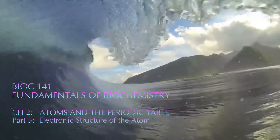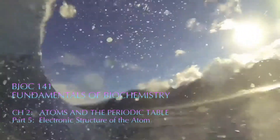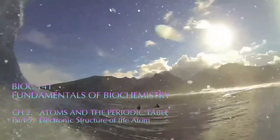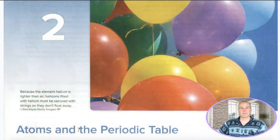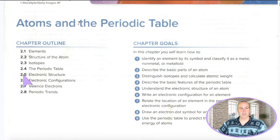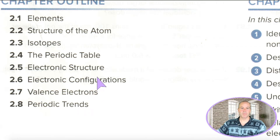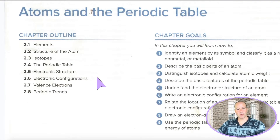Aloha Biochem! In this video we continue in chapter 2 and discuss the electronic structure of the atom. We are covering sections 2.5, 2.6, and 2.7. And then we'll do one more short video next time on the periodic trends. So electronic structure of the atom this time.